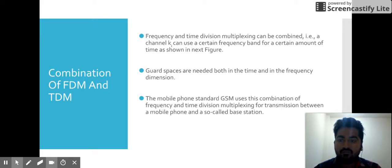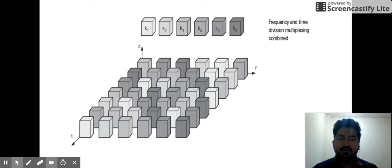We can also have a combination of frequency division multiplexing and time division multiplexing. Frequency and time division multiplexing can be combined. That is, a channel can use a certain frequency band for a certain amount of time. This is a combination of frequency division and time division multiplexing techniques. A channel can have a frequency for a certain amount of time. We again use guard spaces in both time and frequency dimensions. The mobile phone standard GSM uses this combination of frequency and time division multiplexing for transmission between a mobile and the base station.